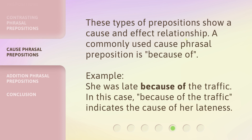Cause phrasal prepositions show a cause and effect relationship. A commonly used cause phrasal preposition is 'because of.' Example: 'She was late because of the traffic.' In this case, 'because of the traffic' indicates the cause of her lateness.